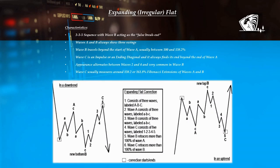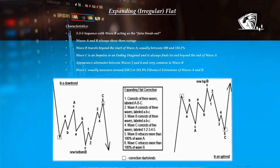Expanding or irregular flat characteristics: 3-3-5 sequence with wave B acting as the fake breakout. Waves A and B always show free swings. Wave B travels beyond the start of wave A, usually between 100 and 138.2%. Wave C is an impulse or an ending diagonal and it always finds its end beyond the end of wave A. Appearance alternates between waves 2 and 4 and is very common in a wave B. Wave C usually measures around 138.2 or 161.8% Fibonacci extensions of waves A and B.